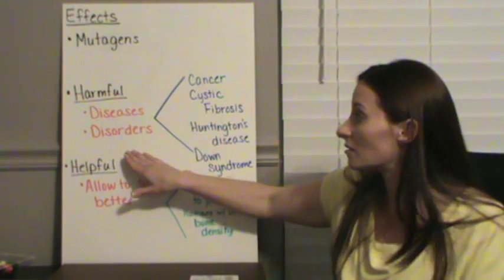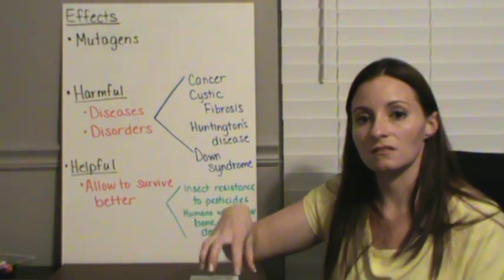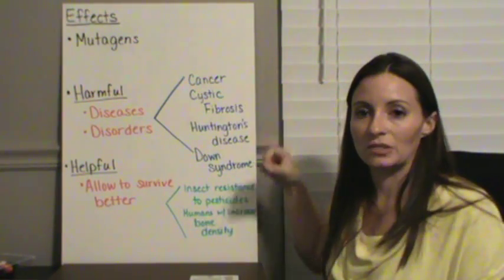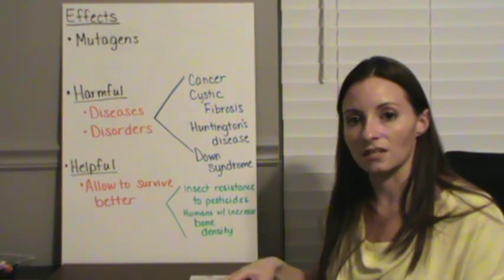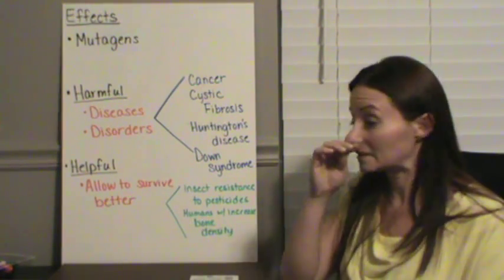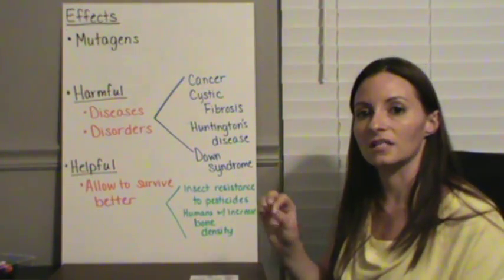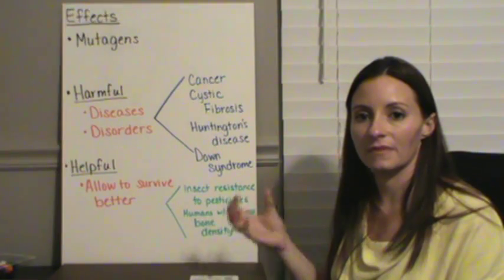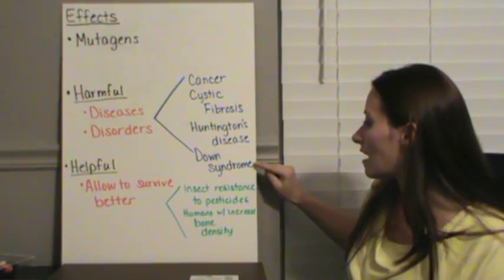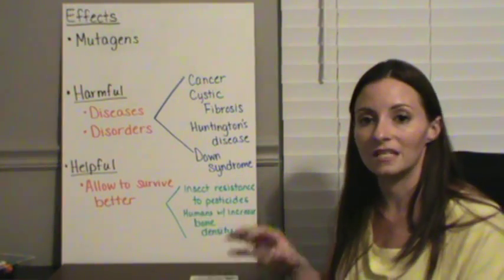Some mutations are harmful. They can cause diseases. They can cause disorders. And they can cause issues within the body. For instance, cancer is an issue of a mutation. We have a mutation to certain genes that control the cell cycle. And the cell cycle goes out of control. And then you have cancer. Cystic fibrosis is a gene mutation. There's one specific spot on a gene that causes cystic fibrosis. Huntington's disease is also one. And then Down syndrome is another one that's actually when you have too many chromosomes in your body.